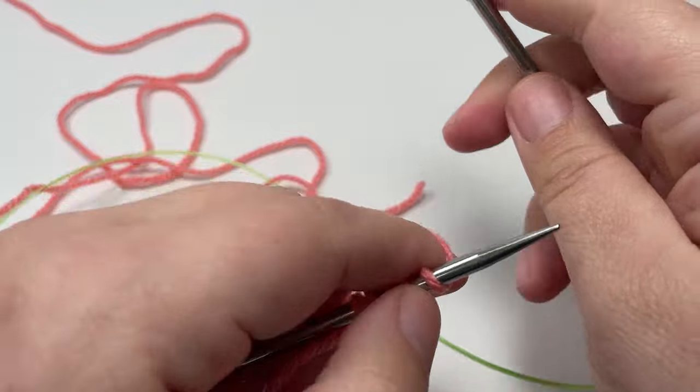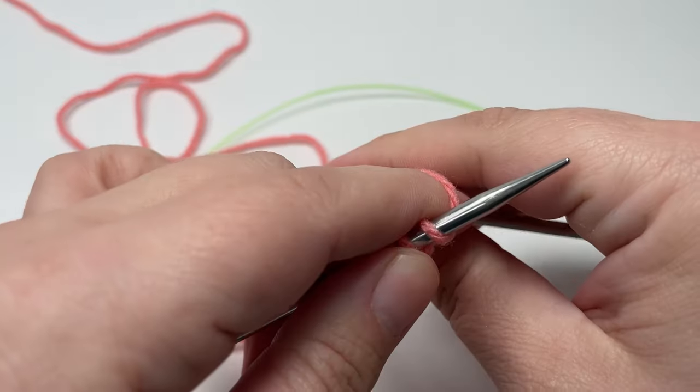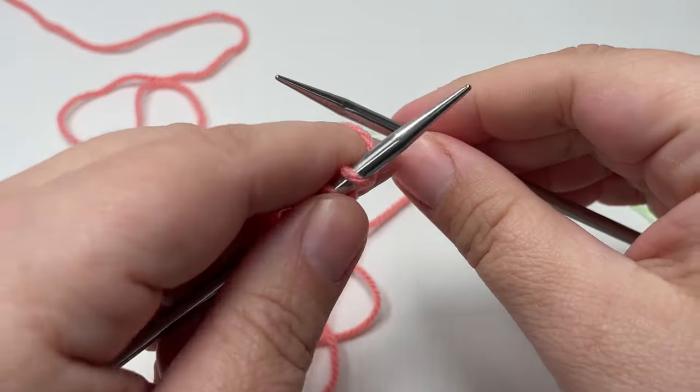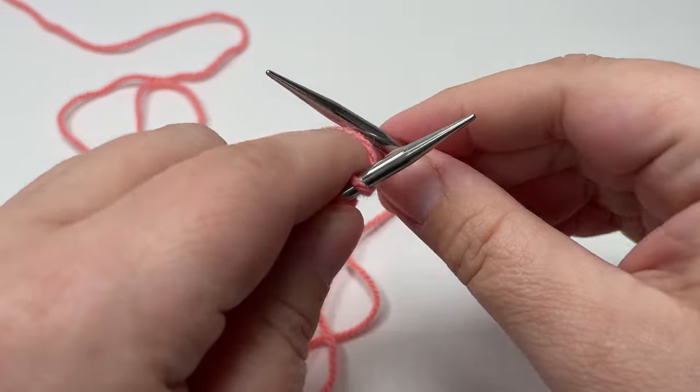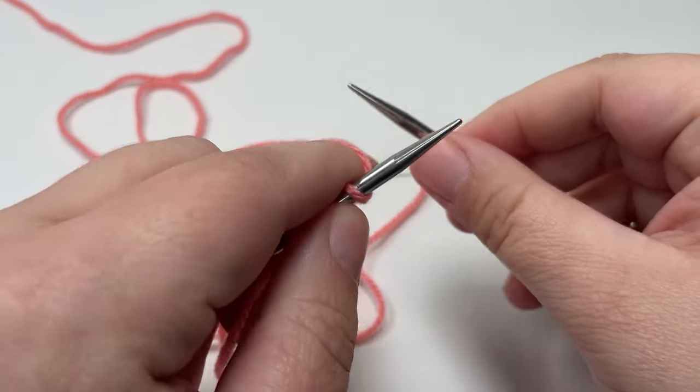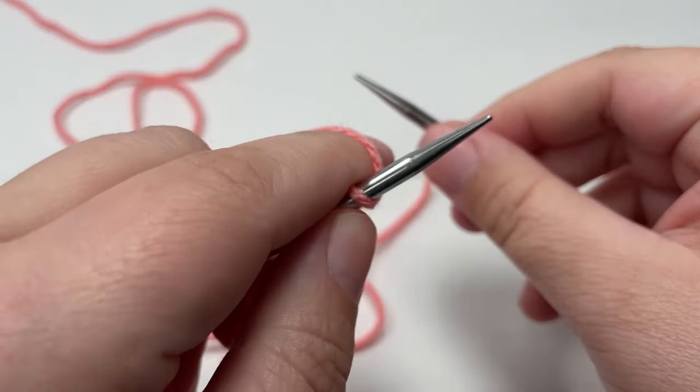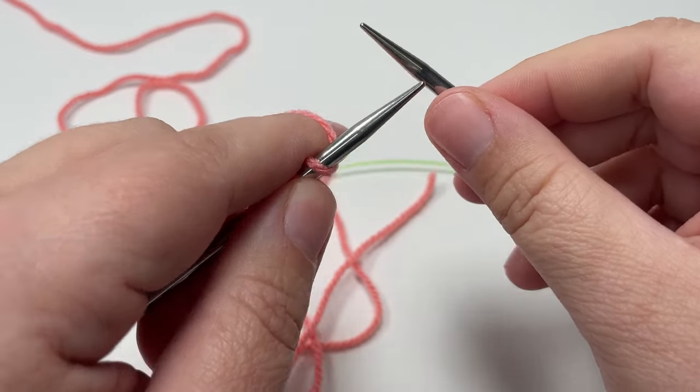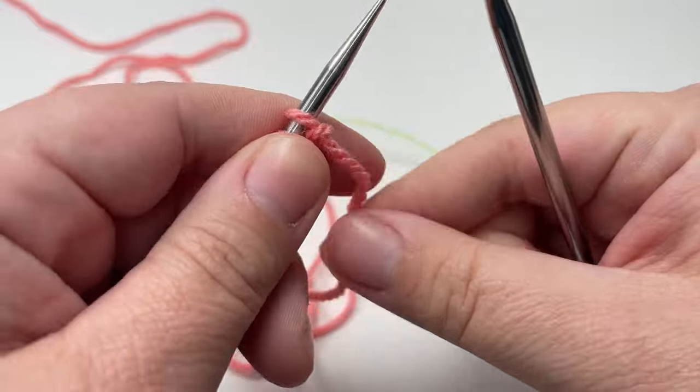The beauty of this shawl is that it is a two row repeat for all the way until your shawl is the size that you want it until you are ready to cast off. On the cast off row I make one tiny tweak but that is the only row that you will work differently to the two row repeat that I'm going to show you now.